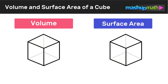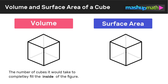Now we are ready to explore the difference between the volume of a cube and the surface area of a cube. The volume of a cube is the number of unit cubes it would take to completely fill the inside of the figure — we can think of it as the total number of unit cubes needed to fill up the inside.